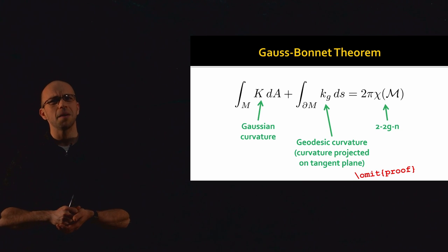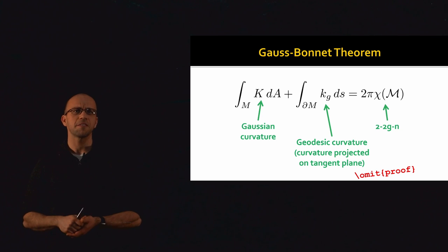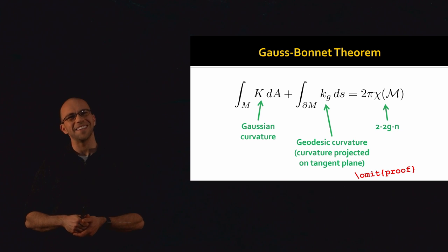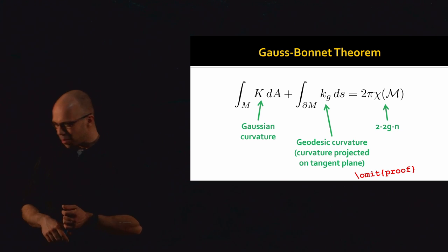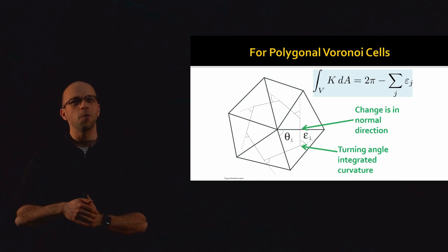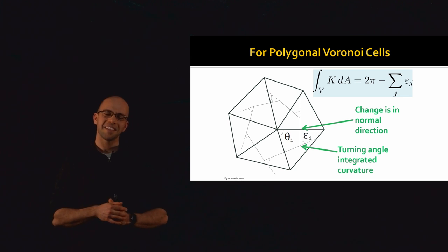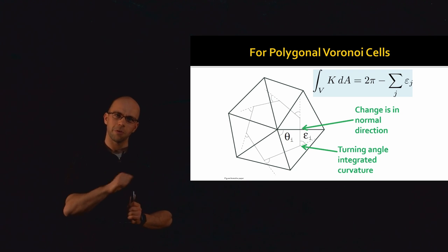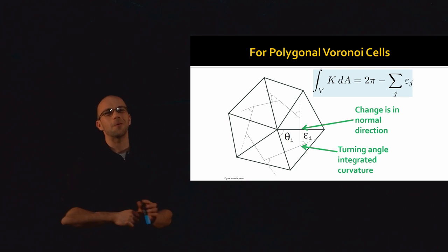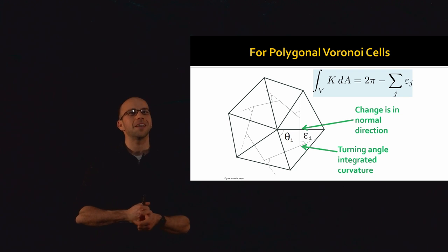To do that, we'll invoke the Gauss-Bonnet theorem — one of the crowning achievements in the differential geometry of two-dimensional surfaces. It states that if you integrate the Gaussian curvature of a surface and add the integral of the geodesic curvature of the boundary, you get 2π times the Euler characteristic of the domain M. The Euler characteristic is a topological invariant: 2 minus 2 times the genus, minus the number of boundary components. The remarkable fact is that you cannot poke a hole in the surface without changing the total integrated Gaussian curvature.